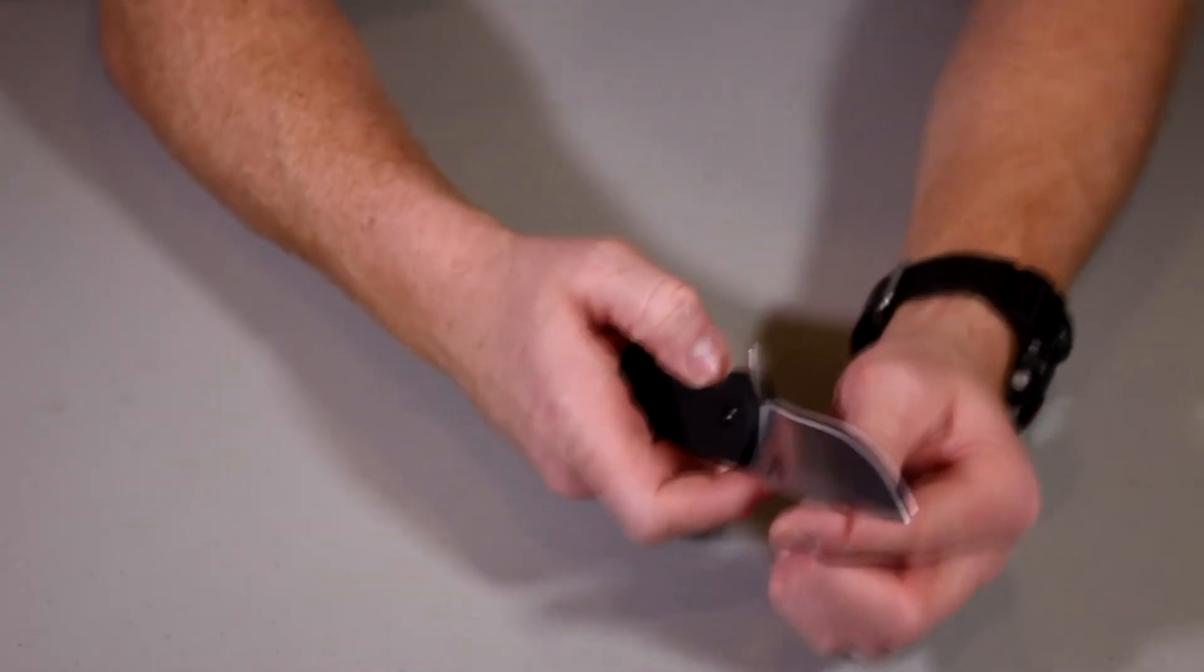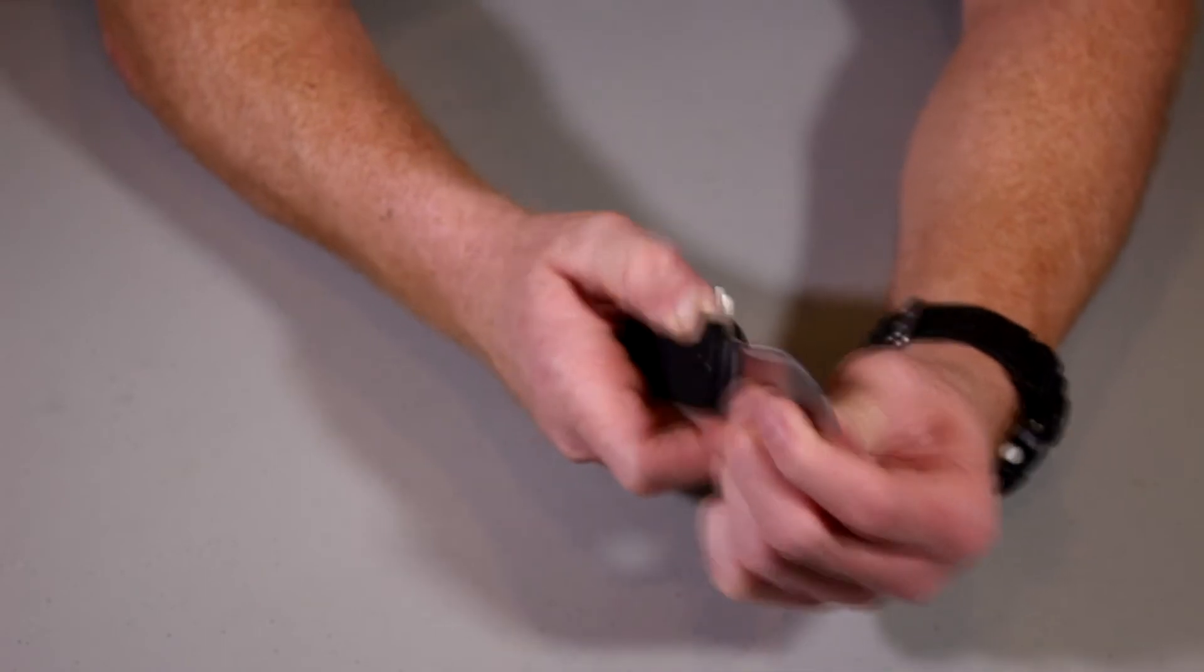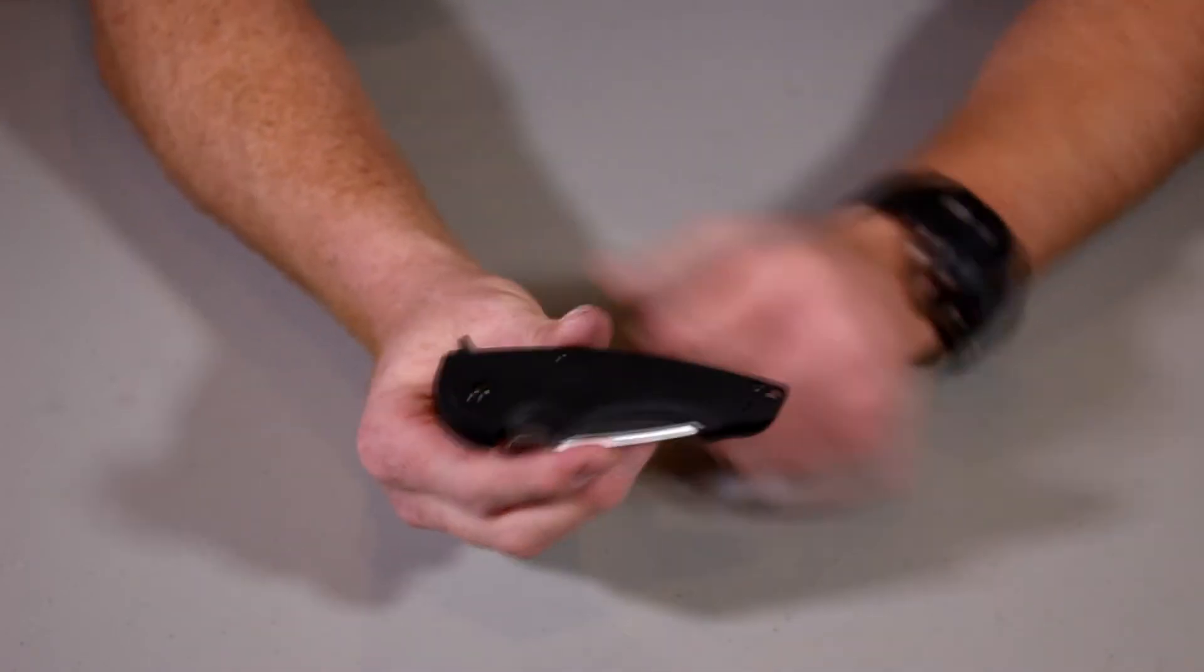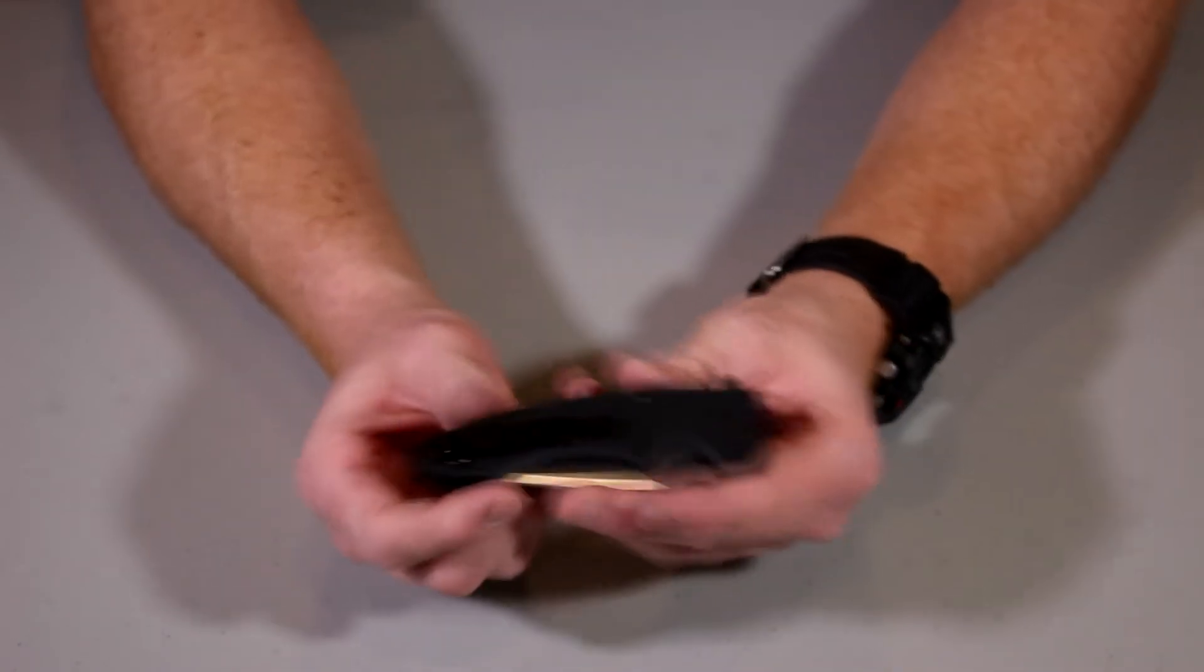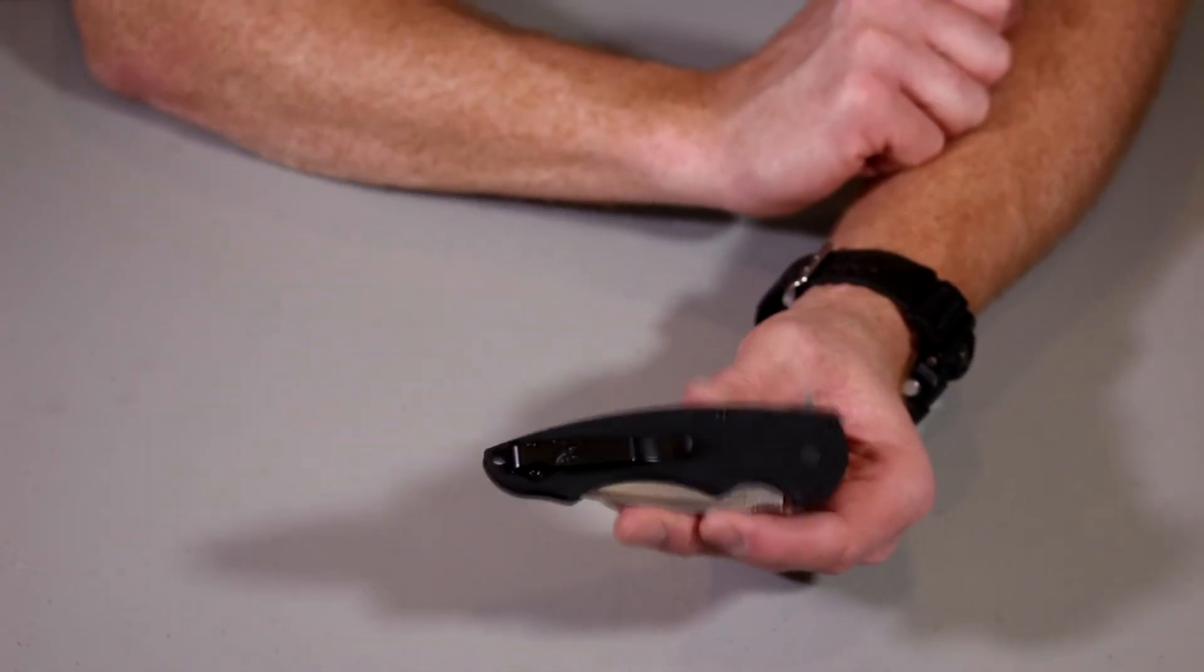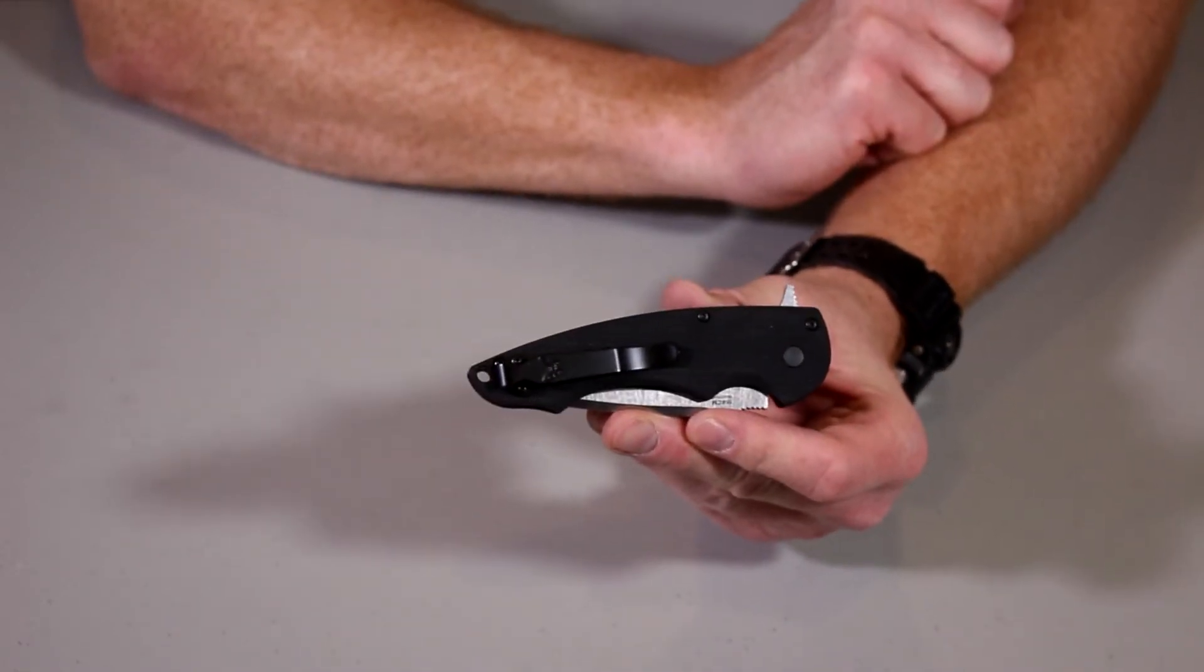And weight, right around 3.42 ounces for weight. Very very good carry. I would say anything 4 ounces and under is kind of between that 3 and 4 ounces is what I'd look for for a weight for everyday carry.